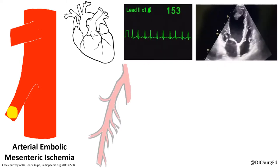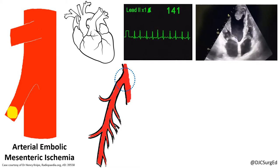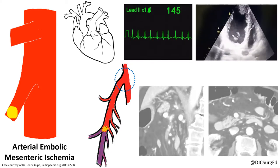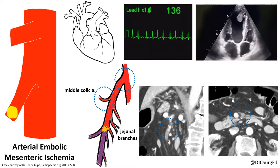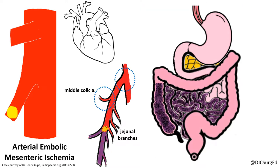The SMA is most commonly affected because of its oblique origin from the aorta, and thromboemboli often lodge in the proximal SMA just distal to the takeoff of the middle colic artery. This creates a classic pattern of ischemia that spares the first portion of the jejunum and part of the colon. Atheroemboli tend to lodge more distally, creating segmental areas of ischemia.